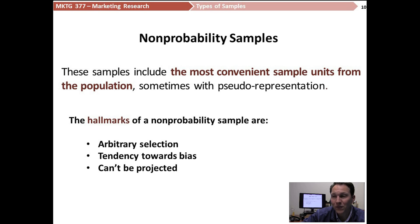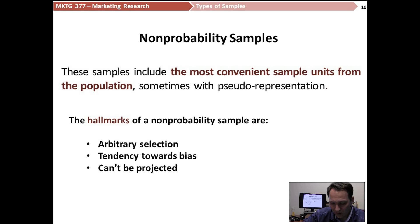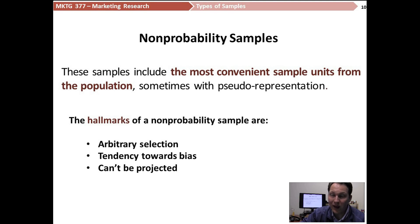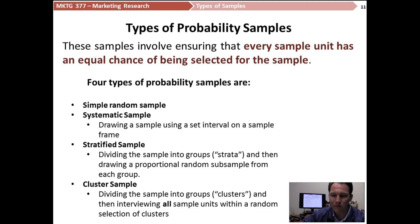That means our results can't be projected — we can only talk about them at the sample level. We cannot project them to the population at large. That doesn't mean they're worthless; it just means we've drawn the most convenient sample units from the population and will sometimes have what we call pseudo representation, but not real representation. One of the big limitations of a non-probability study is that we can't use it to describe anything other than the people included in that study.